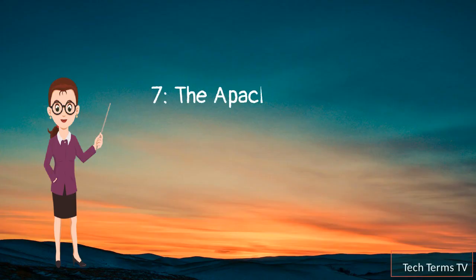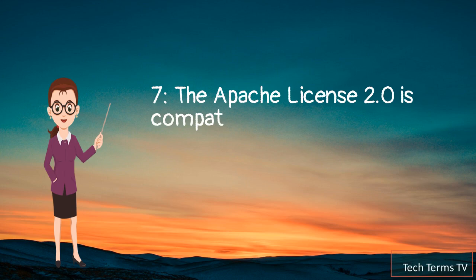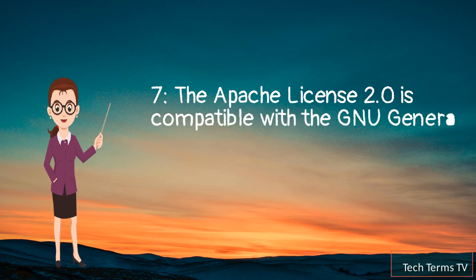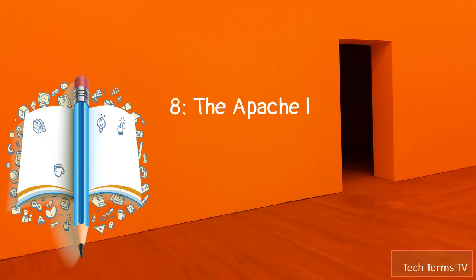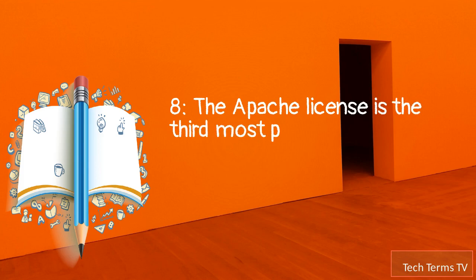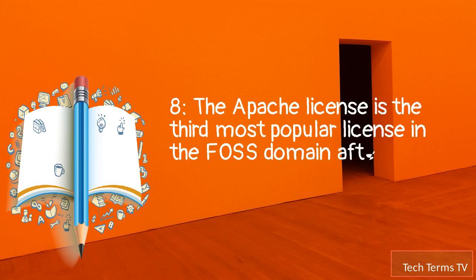7. The Apache License 2.0 is compatible with the GNU General Public License (GPL) version 3, but not with previous GPL versions. 8. The Apache License is the third most popular license in the FOSS domain after the MIT License and GPLv2.